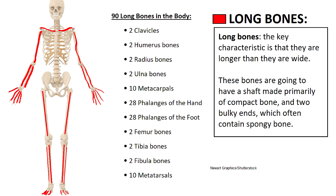First I'll talk about long bones which are the most common type of bone found in the body. These bones can vary in length, but the key characteristic to remember is that they are always going to be longer than they are wide. These bones have a shaft made primarily of compact bone and two bulky ends which often contain spongy bone.